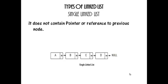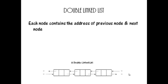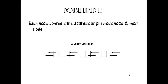The next one is double linked list. In double linked list, each node contains the address of the previous node and the next node. Each node points to not only the successor but also its predecessor. It has two null pointers at the first and last node. The advantage of double linked list is that it is convenient to make backward traversal.